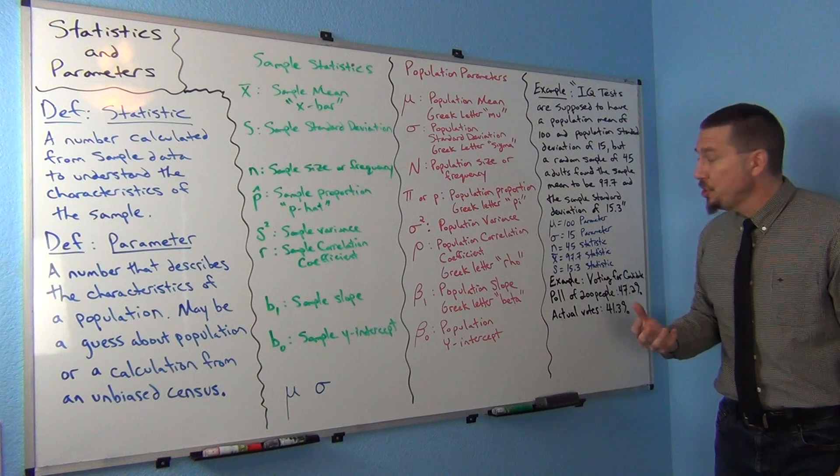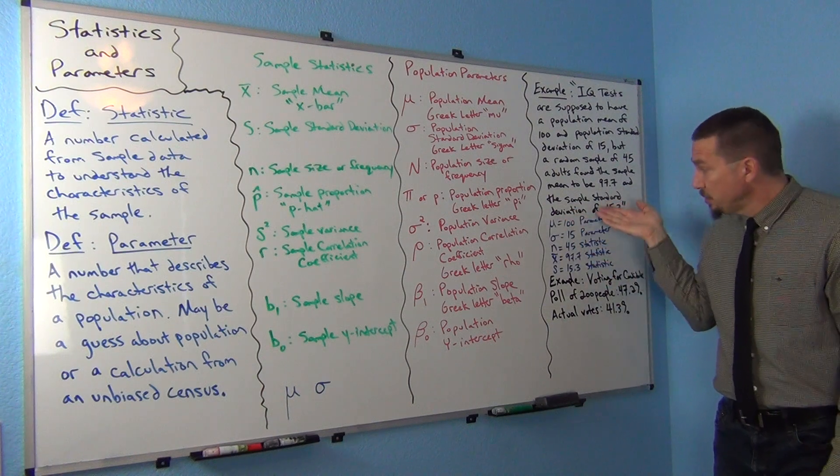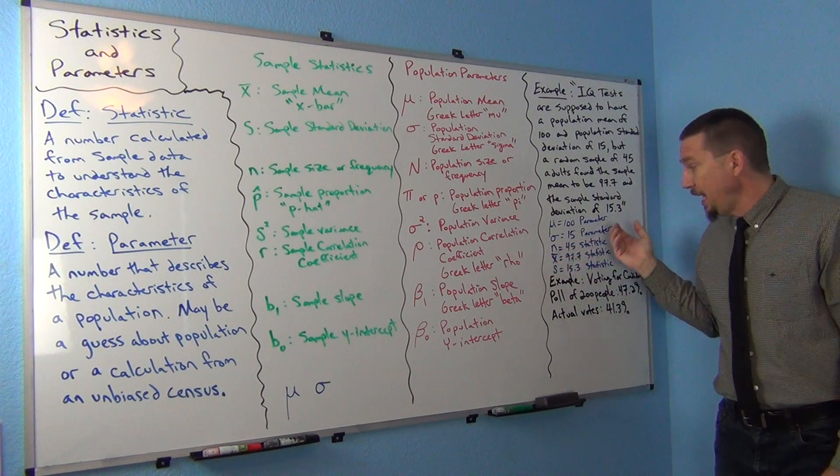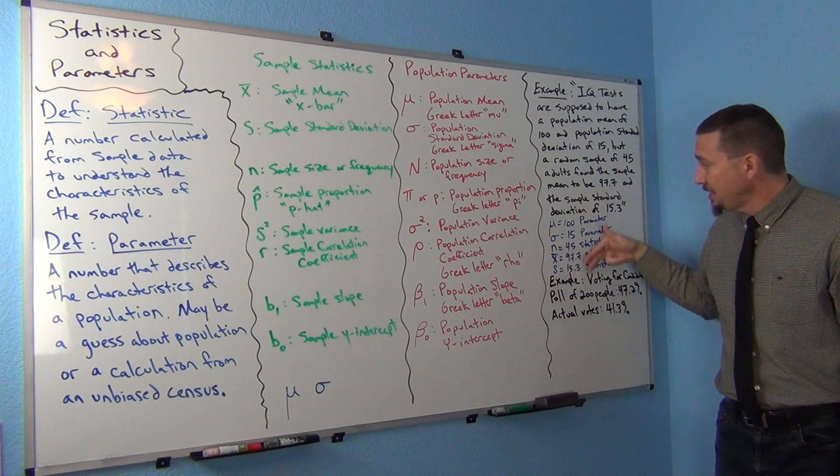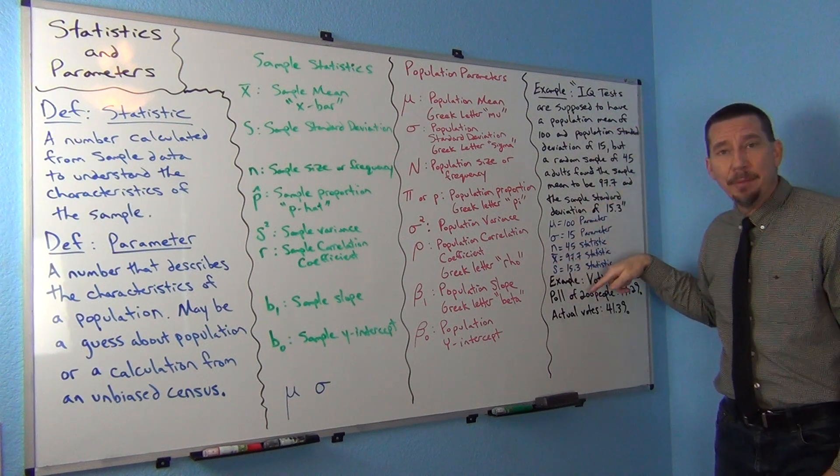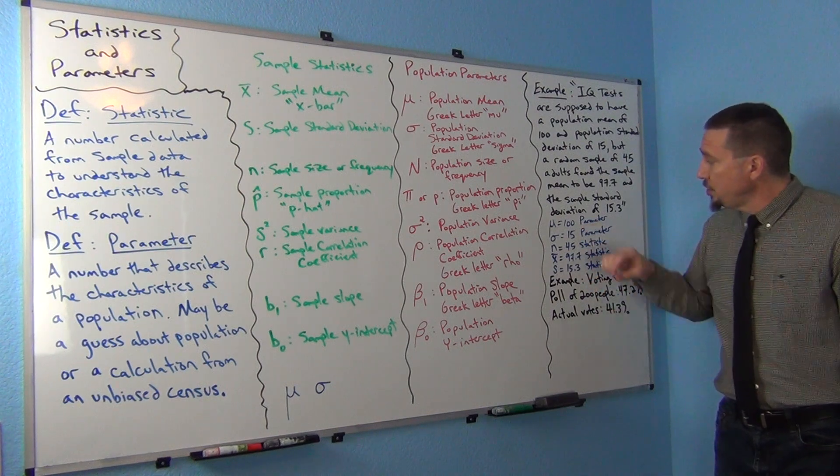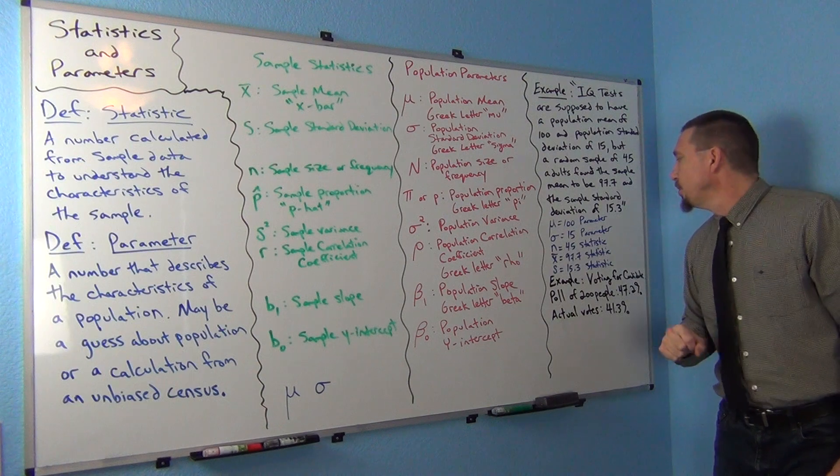A lot of times in computer programs, you'll see mu equals blank, sigma equals blank, x bar equals blank, s equals blank, and you've got to be able to read something like this and be able to type it in to the computer program. You just want to be kind of aware of what these letters are representing.